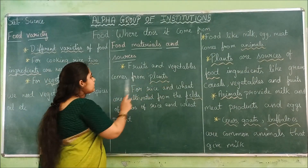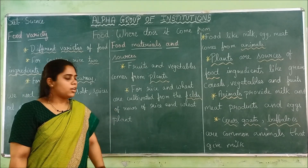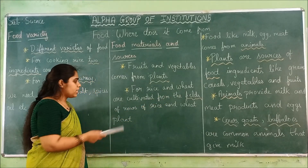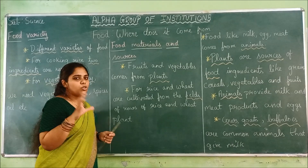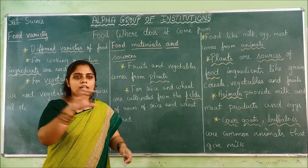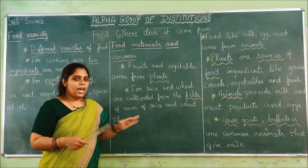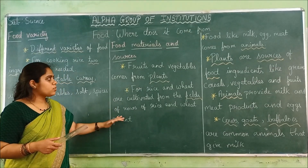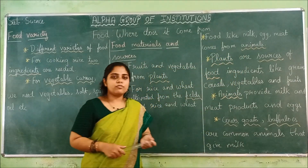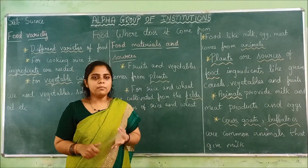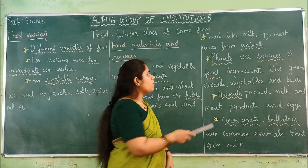First, fruits and vegetables come from plants only. For rice and wheat, they are cultivated from fields — farmers plant rice and wheat in rows and cultivate them. So plants are one source of rice and wheat. Food like milk, egg, and meat comes from animals.